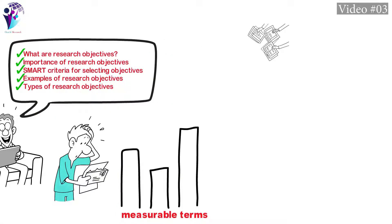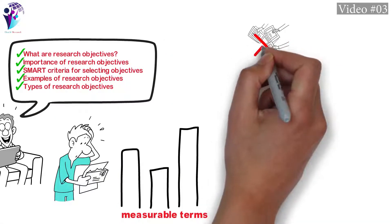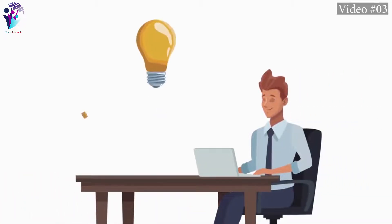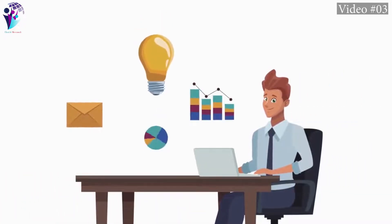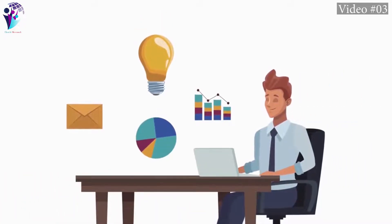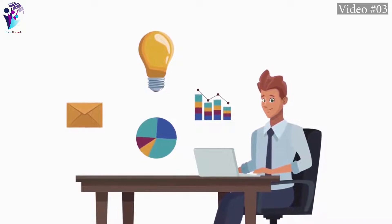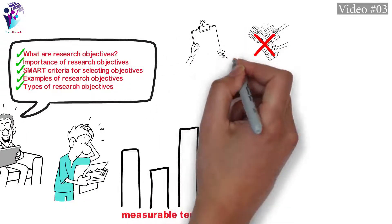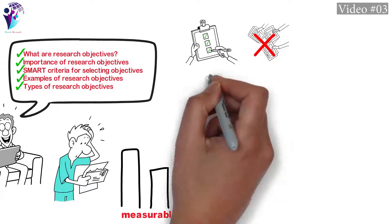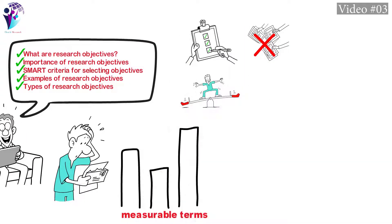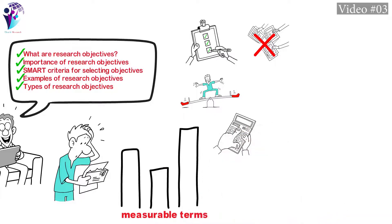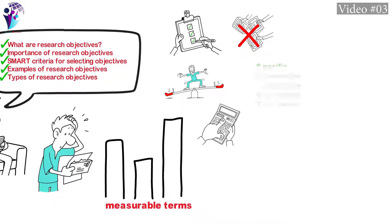Research objectives are very important because they help avoid the collection of data which are not necessary for understanding and solving the problem identified. Objectives use action verbs that are specific enough to be evaluated — for example, to determine, to compare, to verify, to calculate.